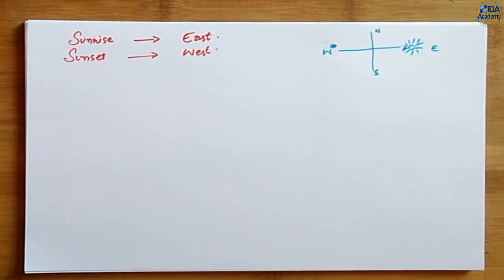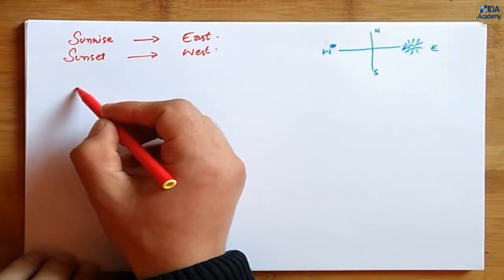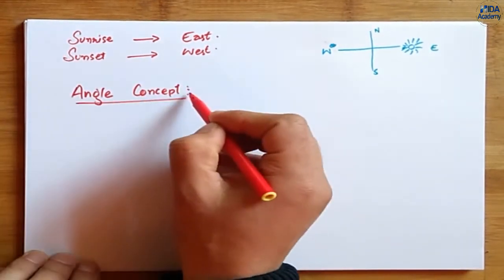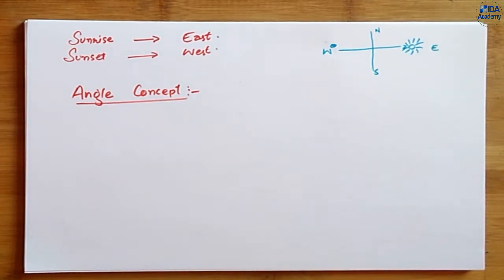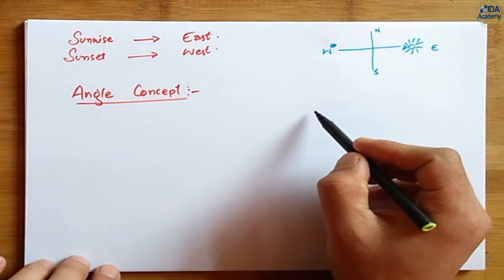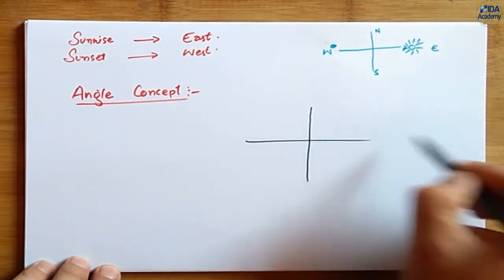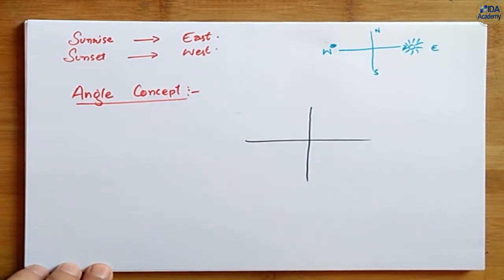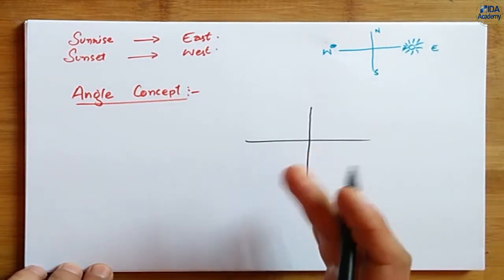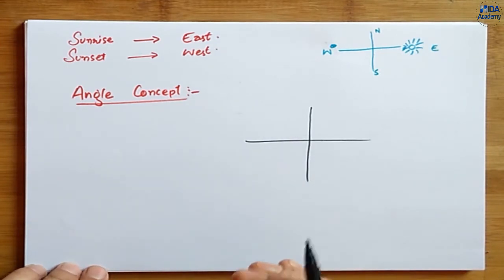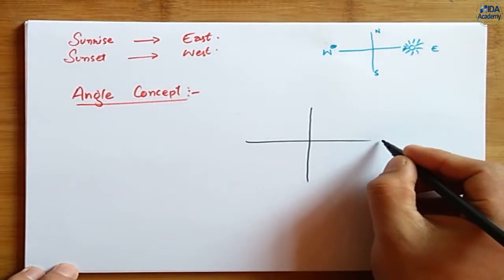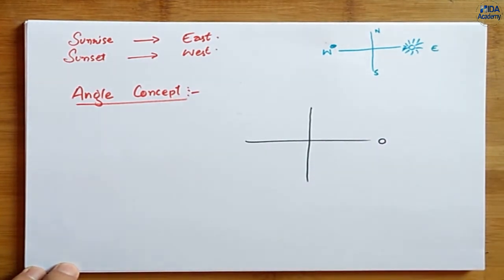Now let's understand one more topic — the angle concept. Understanding angles is equally as important as understanding the four directions. I will draw another plus sign here, and on this plus sign I will not label East, West, North, South. Instead, I will explain angles. I will mark this as 0 — we start from 0 degrees.